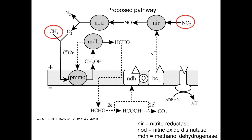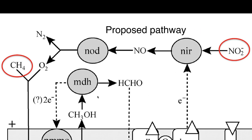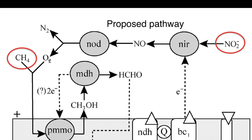Let's look at the electron transport chain and carbon flow in this unique organism. It's pretty similar to aerobic methane oxidation except you start with nitrite. The first thing you do is run it through nitrite reductase to give you nitrous oxide. Then you take two nitrous oxide and run it through nitric oxide dismutase, which splits it into nitrogen gas and oxygen. The nitrogen gas is released, and now we're right back to the same process that the aerobic methane oxidizers use.